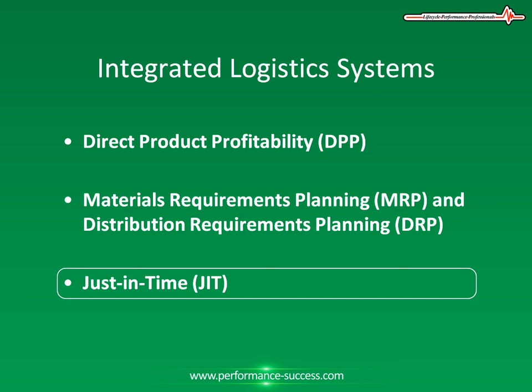The objectives of JIT are vitally linked to distribution and logistics, including the production of goods the customer wants, the production of goods when the customer wants them, the production of perfect quality goods, and the elimination of waste — meaning labor, inventory, movement, and space. There are a number of JIT techniques used to greater or lesser extent by the generally large companies that have adopted the JIT philosophy.